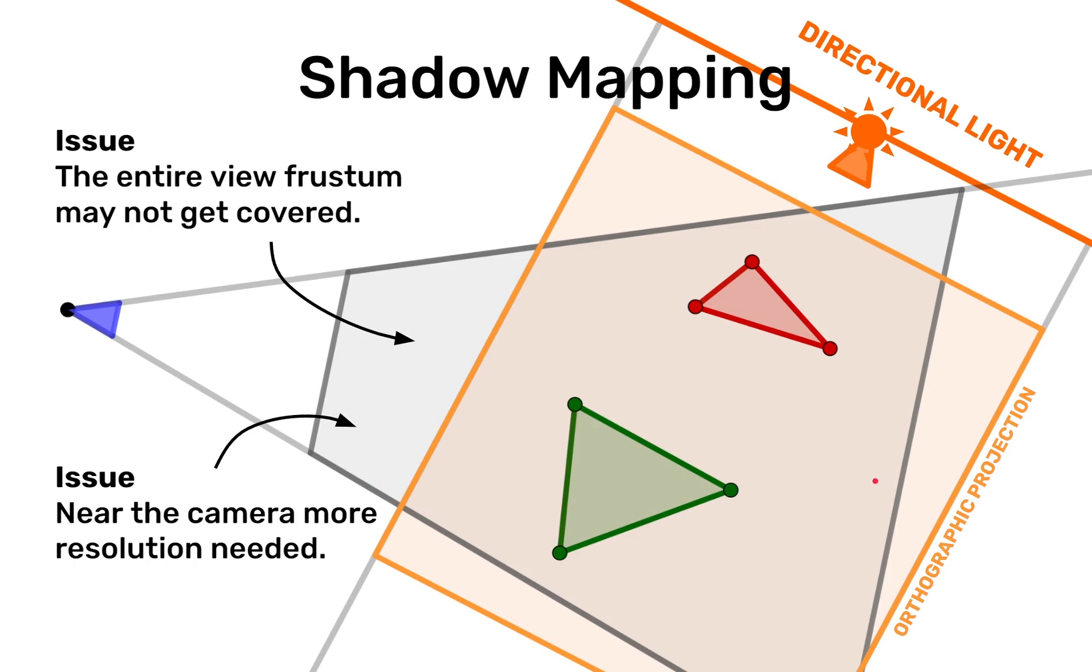There are of course advancements done to the shadow mapping technique and one advancement is cascaded shadow mapping which tries to solve that issue where you need to have more resolution for the shadow map near the camera then further away.